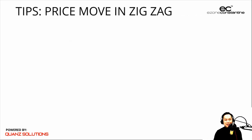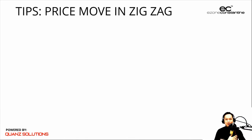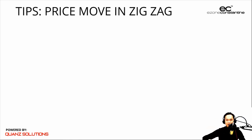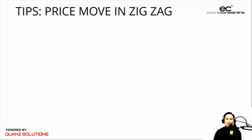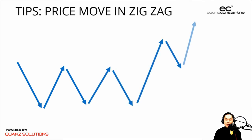Always remember that trading is an art. Now here's a tip: always remember that price moves in zigzag. If you think about your heartbeat — when you see it on a monitor or oscillator — it's always going up and down. When it's always up and down, what does that mean? You're alive! Same with the market — it's always up and down, always a zigzag. A zigzag means the price is alive.